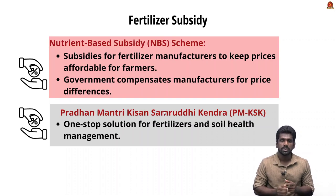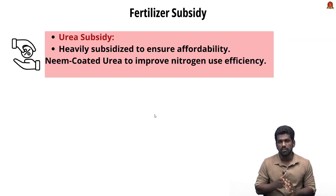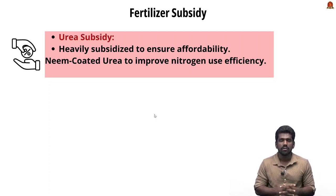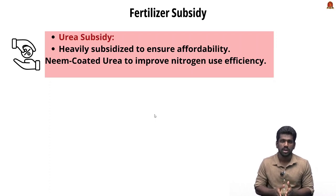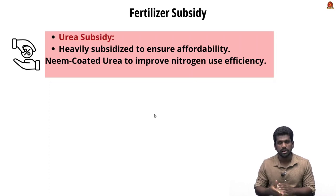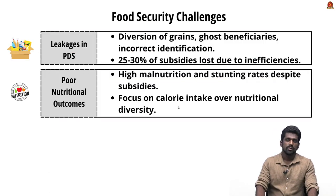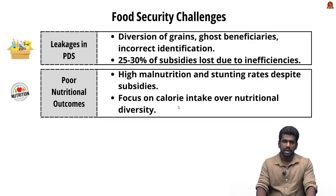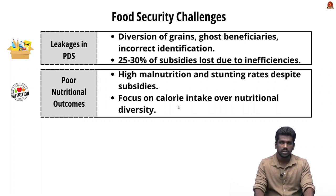Pradhan Mantri Kisan Samruddhi Kendra was recently launched to provide farmers with a one-stop solution for fertilizers, including soil health management. Urea is heavily subsidized to ensure it remains affordable to all farmers. To avoid overuse, the government launched neem-coated urea, which improves nitrogen use efficiency.